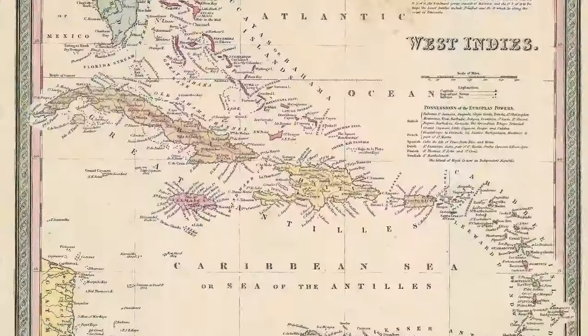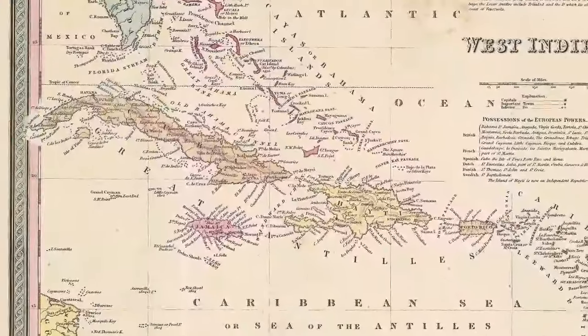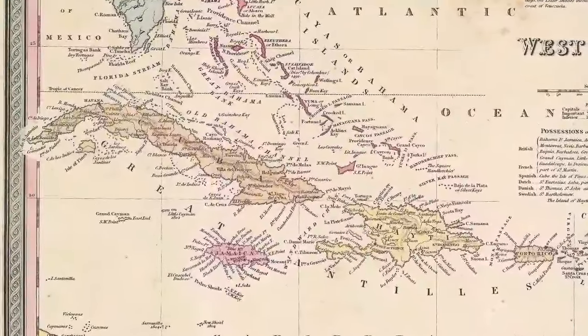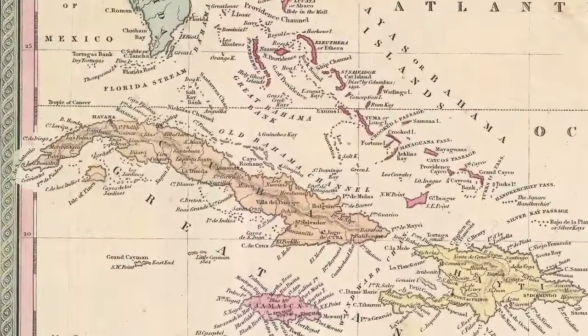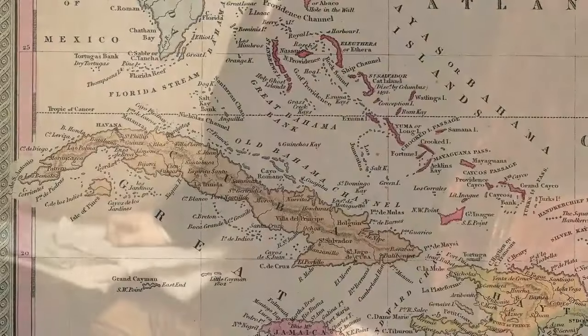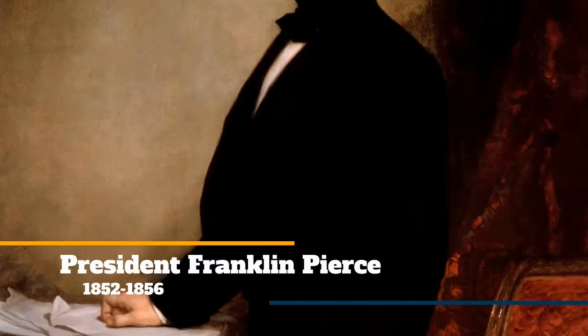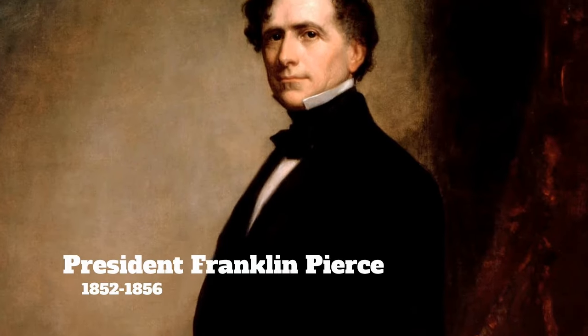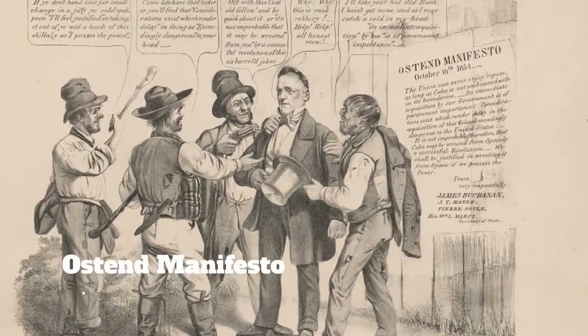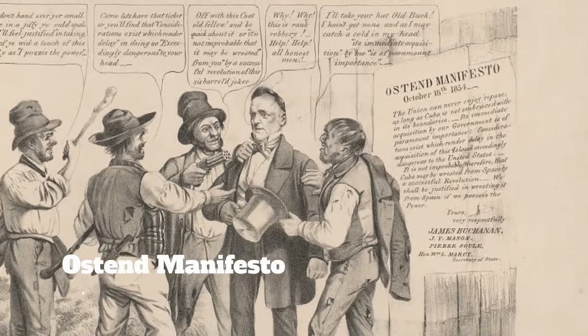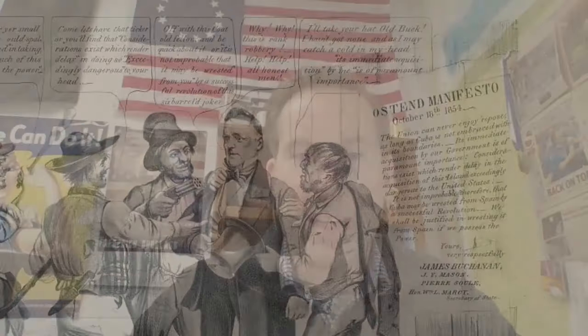Perhaps the most desirable region was the island of Cuba. With its rich soil, tropical climate, and established sugar plantations, many expansionists in the South were eager to get their hands on it. In 1852, President Franklin Pierce dispatched a group of American ambassadors to purchase Cuba from Spain. Their negotiations resulted in the Ostend Manifesto, which was leaked to the U.S. press. This effectively shut down the negotiations as Northern Congressmen worried about adding more slave territory to the United States.